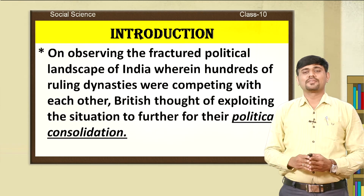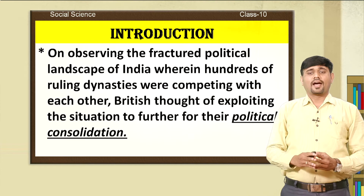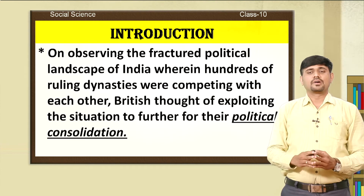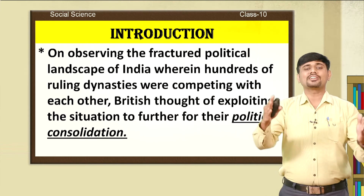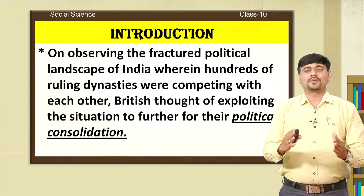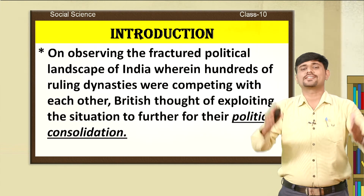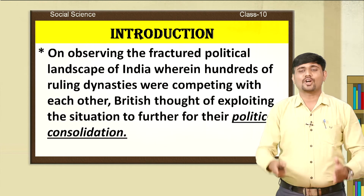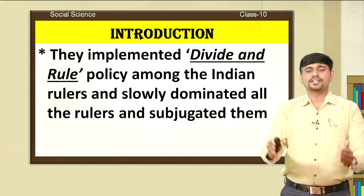My dear students, India was scattered into a number of provincial states and the Indian native rulers were not having coordination among themselves. They were competing with each other and this situation was exploited by the British government. The British thought of exploiting the situation further for their political consolidation in India. They also implemented the divide and rule policy among the Indian rulers, slowly dominating all the rulers and subjugating them, taking the Indian native kingdoms under their control.